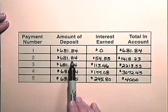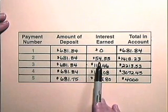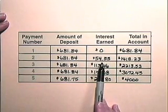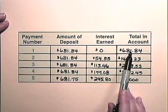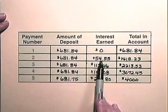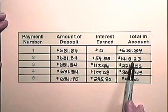In the second year, there is a deposit made of $681.84. The interest earned is 8% times $681.84. The interest is $54.55. So the total in the account is $681.84 plus $681.84 plus $54.55, which is $1,418.23.